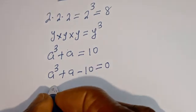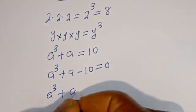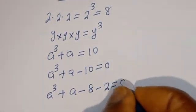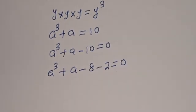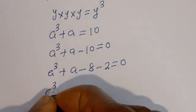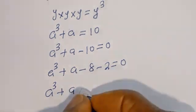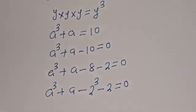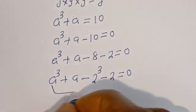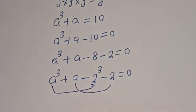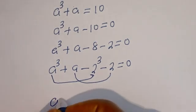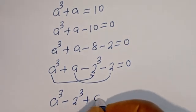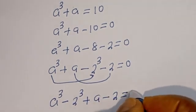Here we have A to the power of 3 plus A minus 10, which can be written by splitting minus 10 as minus 8 minus 2, equal to 0. Then A to the power of 3 minus 8 can be written as A to the power of 3 minus 2 to the power of 3, and minus 2 is equal to 0.